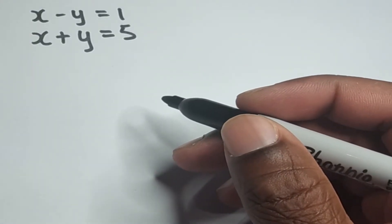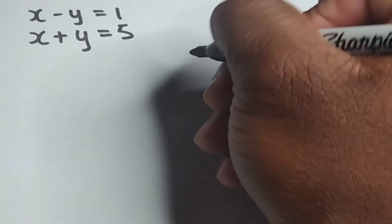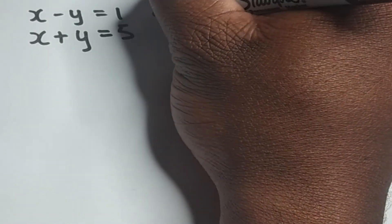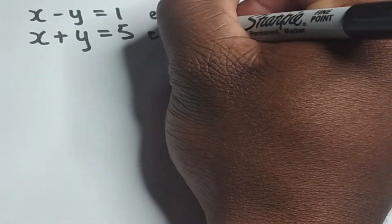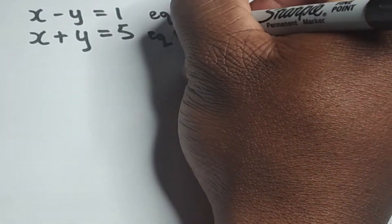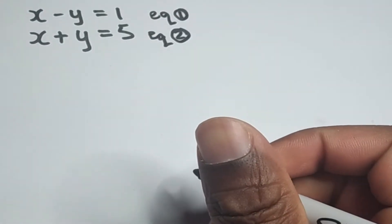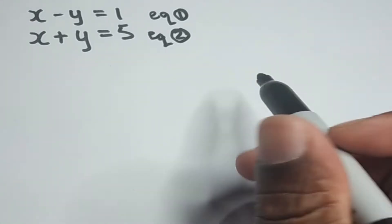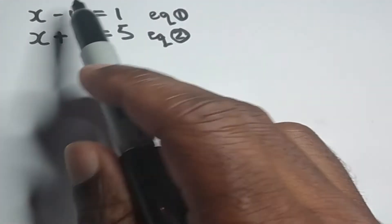Now what we can do is solve this using the substitution method. First, I'm going to call the top equation equation one and I'm going to call the second equation equation two. Now what I'm going to do is transpose equation one for x.